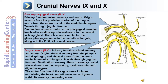Cranial nerve ten is the vagus nerve. Its primary function is mixed sensory and motor. The origin is visceral sensory from the pharynx and diaphragm, and visceral motor from the motor nuclei in the medulla oblongata. It travels through the jugular foramen, and its destination for sensory fibers is the sensory nuclei, with visceral motor going to the respiratory, cardiovascular, and digestive organs. The motor function of the vagus nerve includes modulating the heart rate and smooth muscles and glands within its sensory monitoring areas.